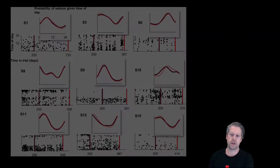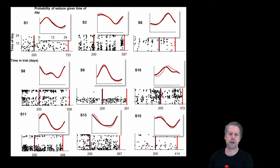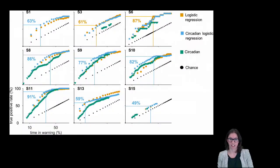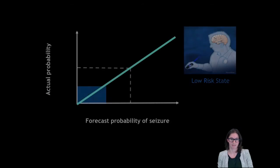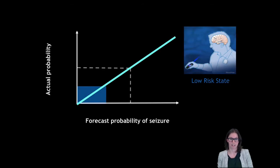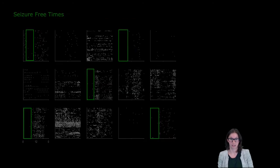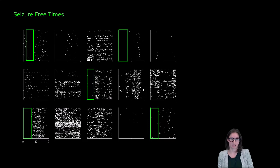We found that including time of day in seizure forecasting algorithms improved performance for the majority of patients. In a simulated clinical use case, forecasting algorithms alerted patients to between 50% and 90% of seizures. Patients were also informed about times of safety or low seizure risk when they could be confident no seizure would happen. Using circadian information increased the amount of time patients could be assured of safety.